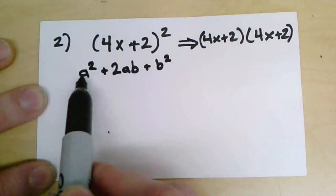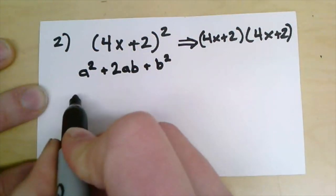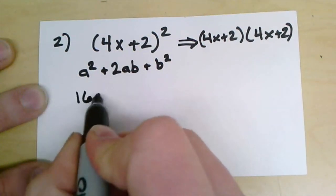So if I'm going to square a, that means I'm squaring 4x and I'm going to square it. That gives me 16x squared.